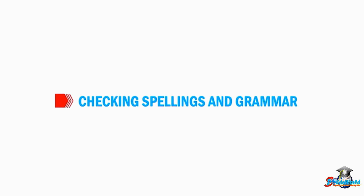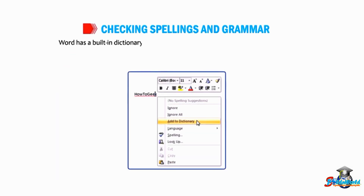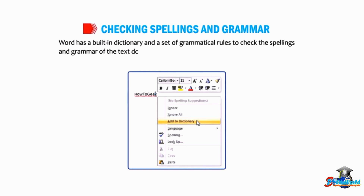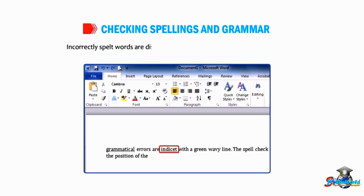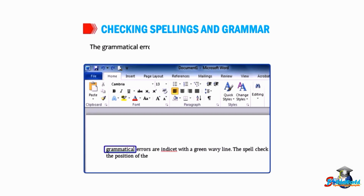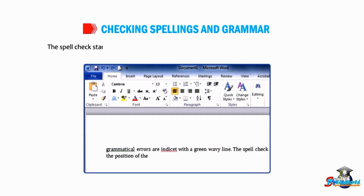Now let us talk about checking spelling and grammar. Word has a built-in dictionary and a set of grammatical rules to check the spellings and grammar of the text document. Incorrectly spelled words are displayed with a single red wavy line under them. Grammatical errors are indicated with a green wavy line. The spell check starts from the position of the cursor and checks the complete document.